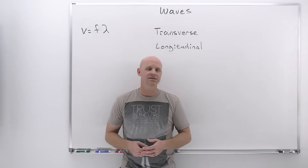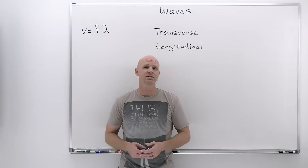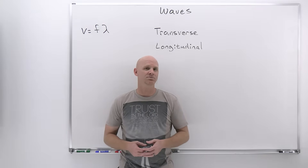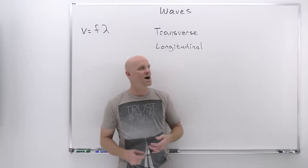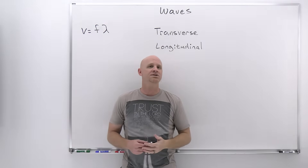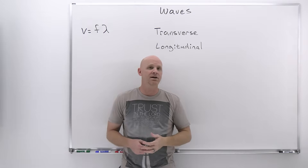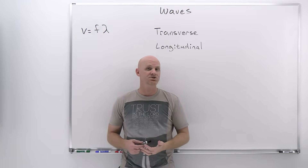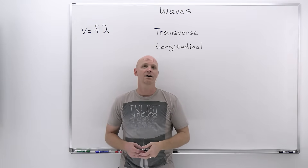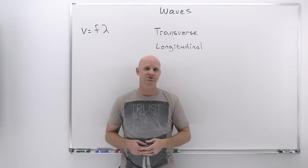Waves are going to be the topic of this lesson in my new general physics playlist, which when complete will cover a full year of university algebra-based physics. In this lesson, we're going to talk about the two major types of waves: transverse and longitudinal. We'll talk about the relationship between wave speed, frequency, and wavelength, the wave speed of a wave on a string, and then wave interference, both constructive and destructive.